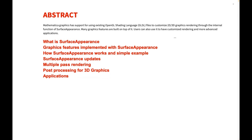I'm going to give a rough overview of what SurfaceAppearance is and go a bit deeper. Then I'll list a few features implemented with SurfaceAppearance so you have a rough idea of how much it can achieve. I'll use a very simple example to walk you through how SurfaceAppearance works step by step, followed by updates about new things added and two demos about multiple path rendering for both 2D and 3D.